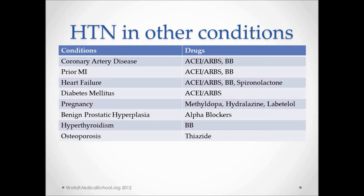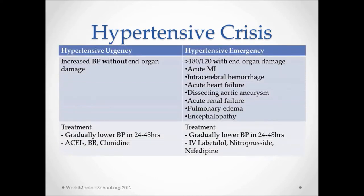Let's talk about hypertensive crisis, which involves hypertensive urgency and hypertensive emergency. Hypertensive urgency means increased blood pressure without end organ damage, while hypertensive emergency means blood pressure of systolic 180 over greater than 120 diastolic, with end organ damage. The goal for both is to gradually lower the blood pressure. For urgency, ACE inhibitors, beta blockers, or clonidine can be used. For emergency, intravenous labetalol, nitroprusside, or nifedipine can be used.